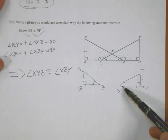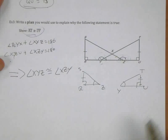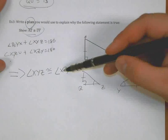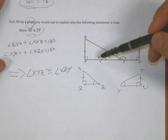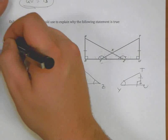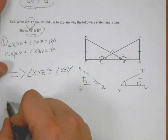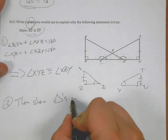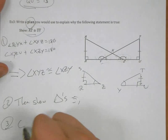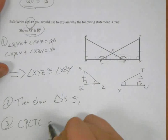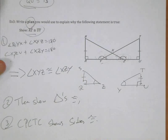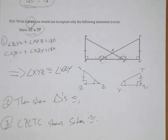And now, voila, now you've got angle, angle, side to explain these. That's our plan. Our plan would be show this angle, show this angle, then show triangles congruent. CPCTC shows sides. You can go on. Okay.